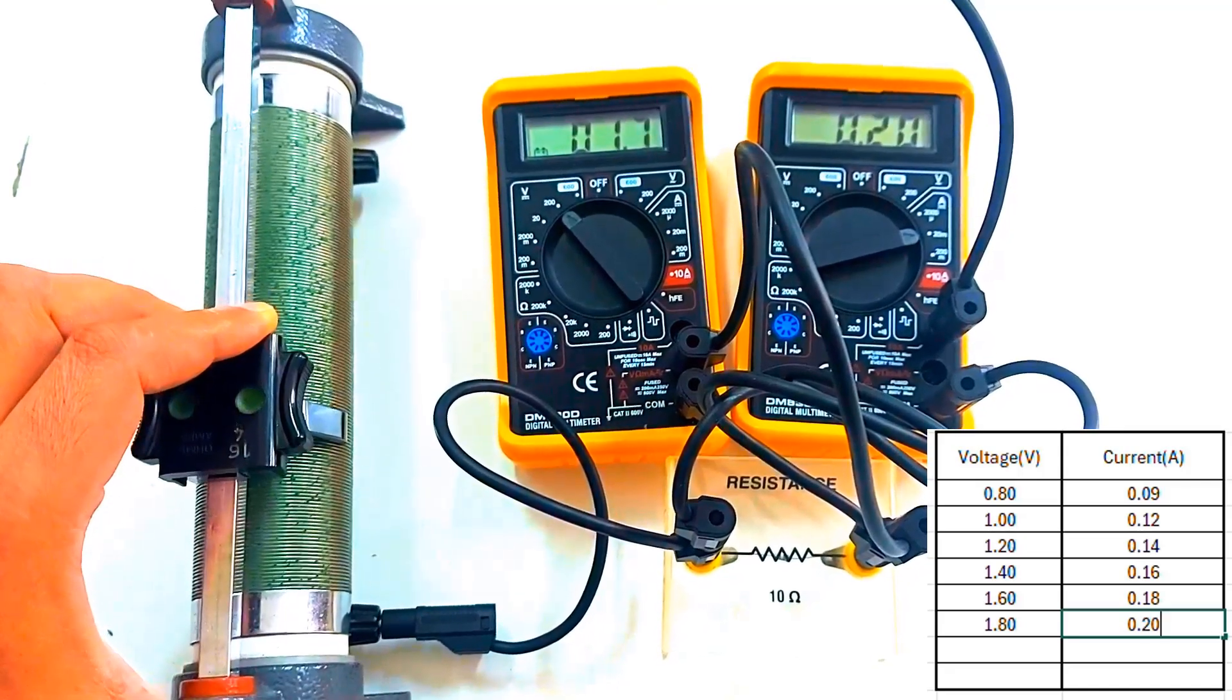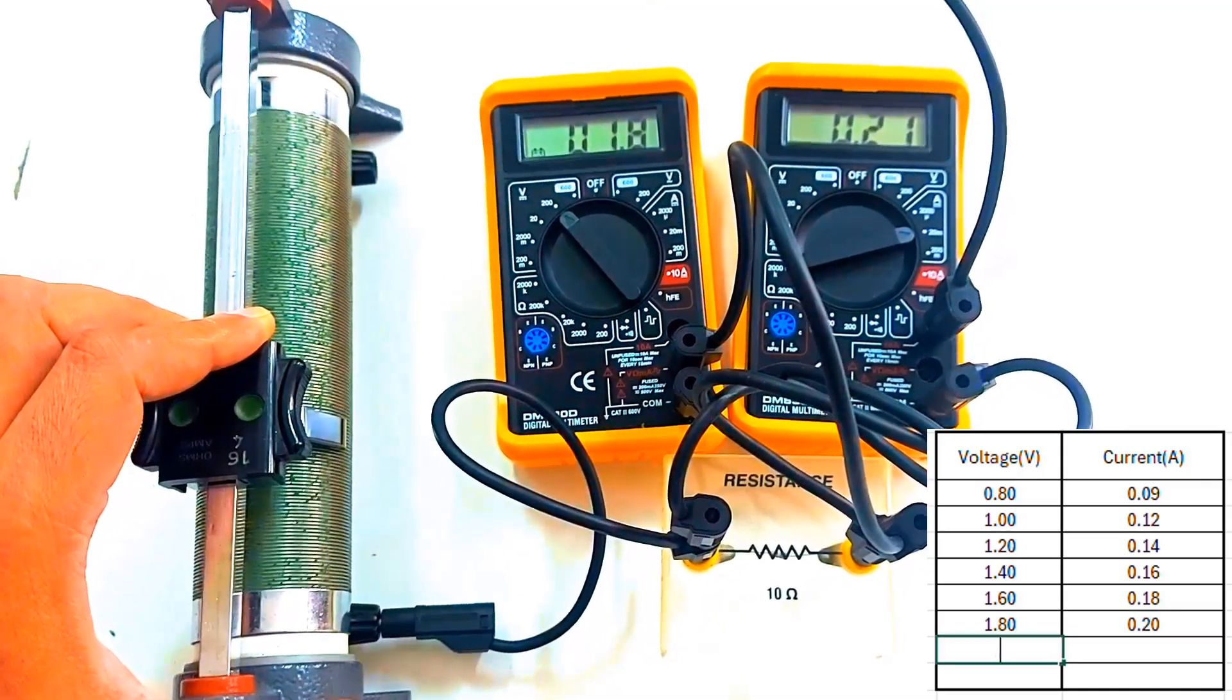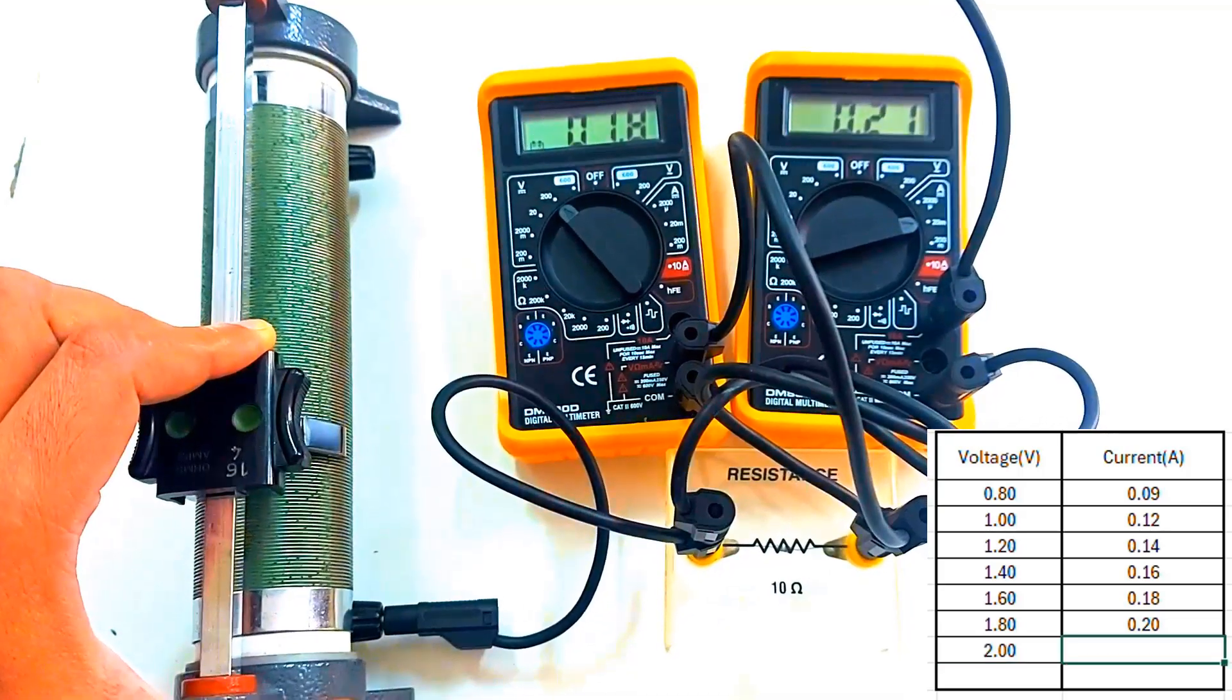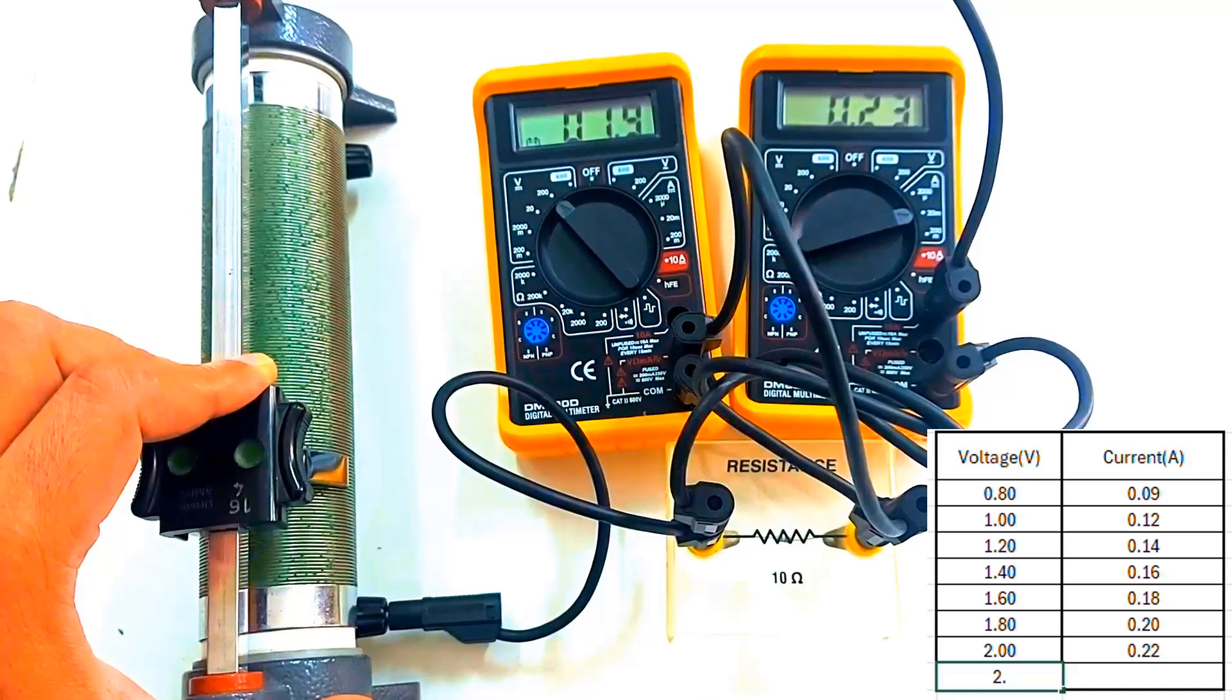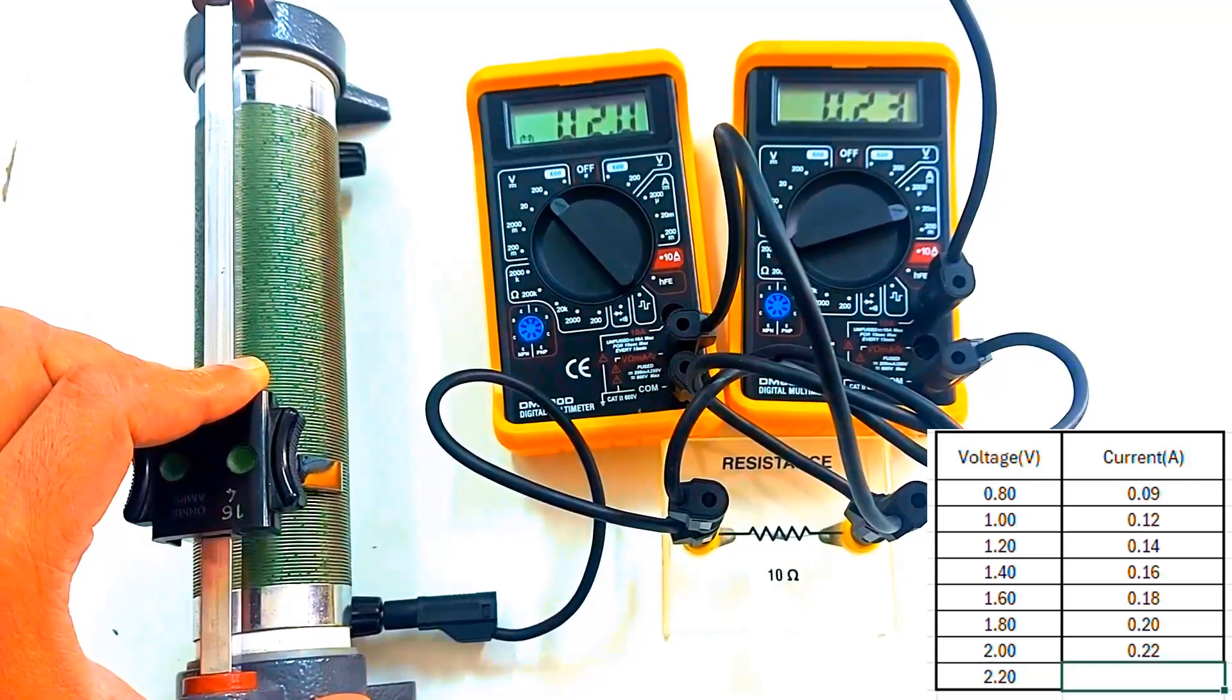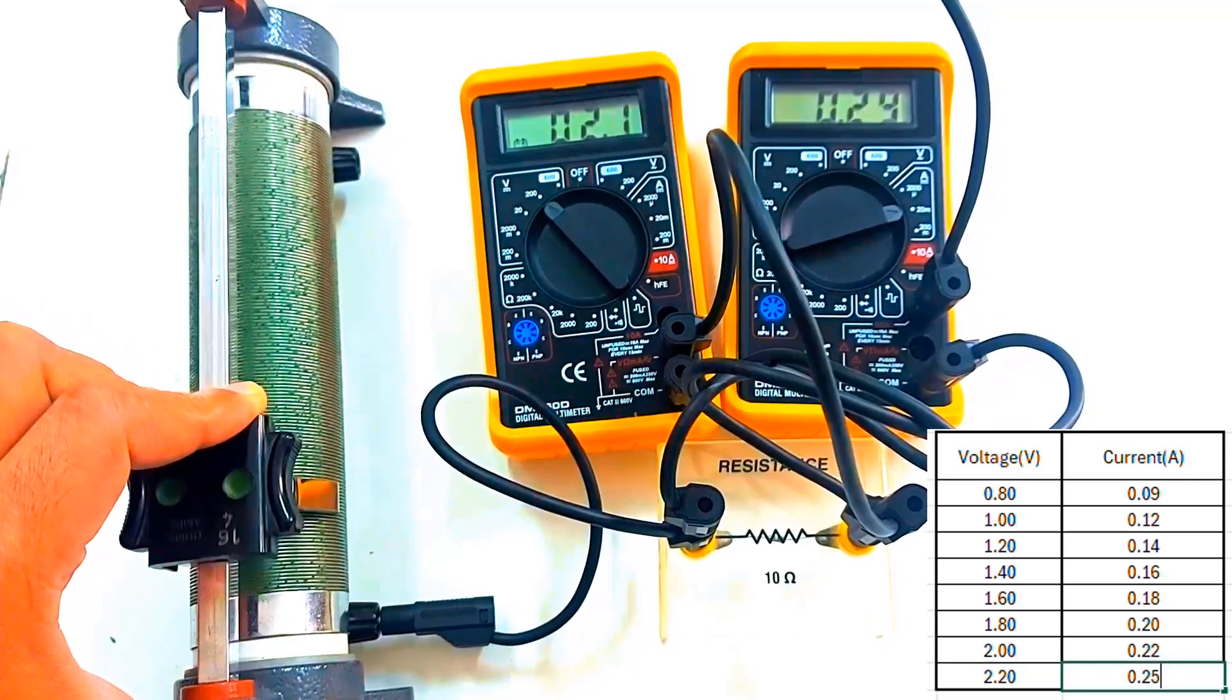With the resistor cooled and our data collected, it's time to plot our results. Watch closely. If Ohm's law holds, our graph should be a perfectly straight line showing a clear linear relationship between voltage and current.